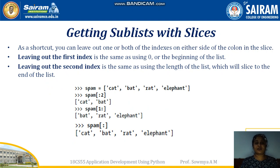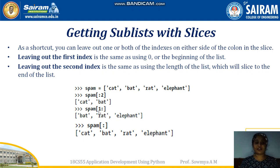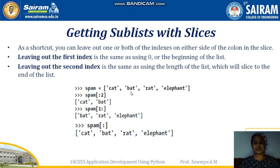We can also leave out one of the indexes in a slice. If the first index is omitted but a colon is present, the first index defaults to 0. If the second index is omitted, it defaults to the last index of the list. So spam[1:] returns from 'bat' to the end of the list. And spam[:] with only a colon lists all elements from the list.